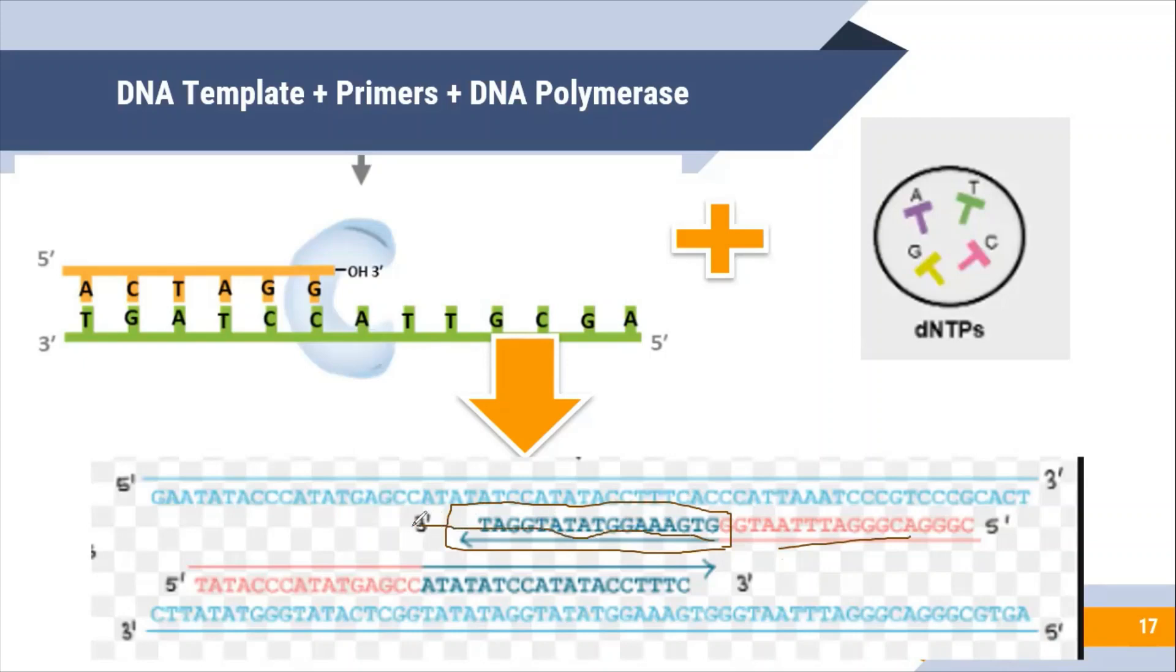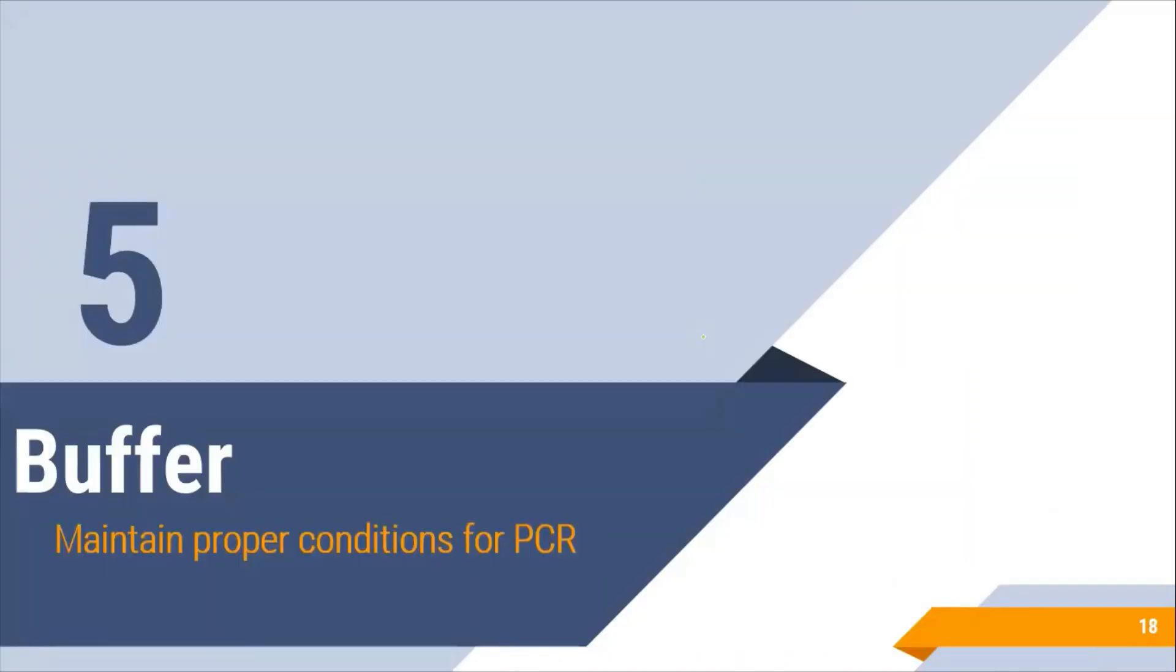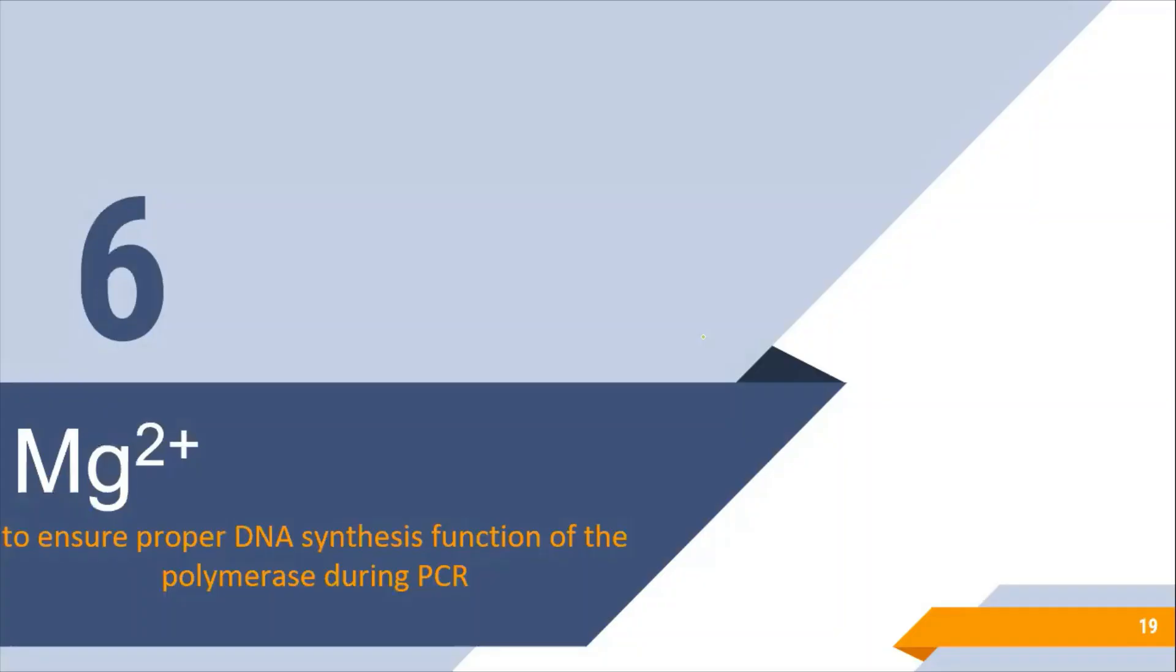After primers attachment, primers give us 3' OH groups and after DNA polymerase attachment we can get amplification by adding dNTPs. But to maintain these main components we further need buffer and magnesium ions. Buffer maintains the proper conditions of PCR like proper pH and optimal conditions. Magnesium ions ensure the function of DNA polymerase enzyme.